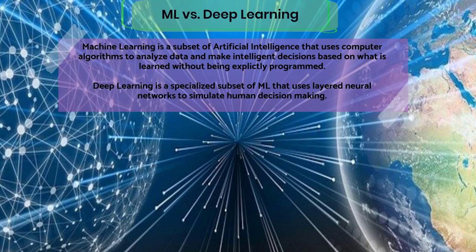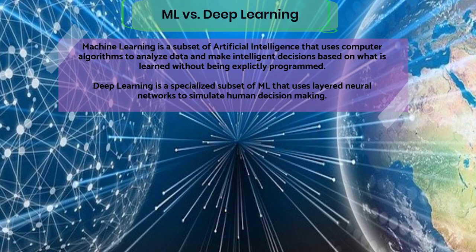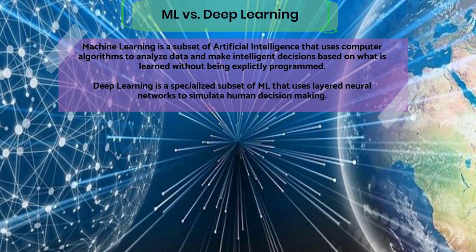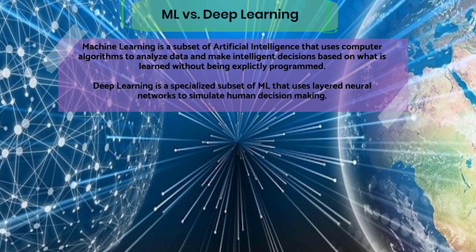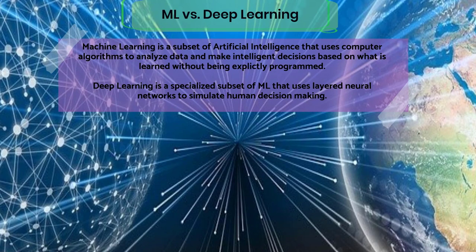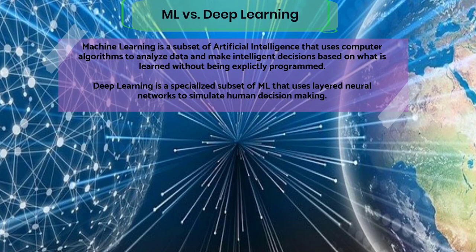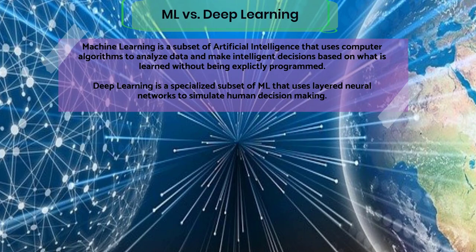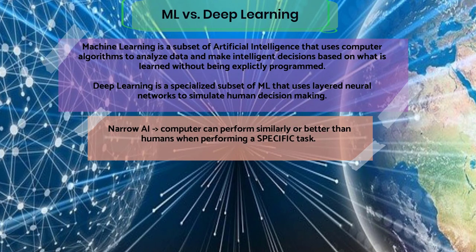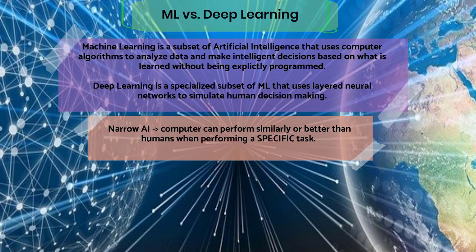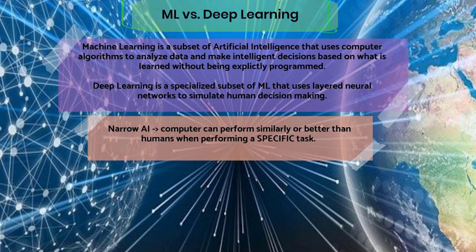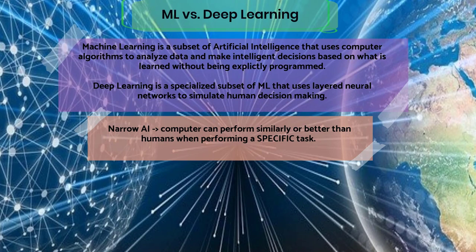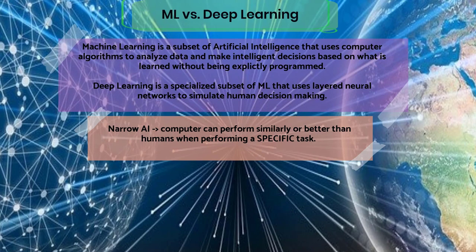AI pioneers imagined a world where computers would possess essentially the same characteristics of human intelligence — the ability to reason and have the same senses as humans. We haven't quite gotten to that point yet, and there's a good question whether we ever will. Where we have gotten so far is what's referred to as narrow AI: when a computer or technology is able to perform specific tasks as well as or better than humans can. For example, when we make an AI classify an image — figuring out if it's a dog or a cat — that's narrow AI.